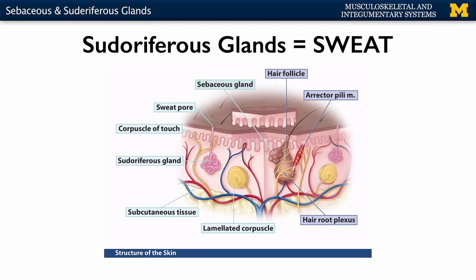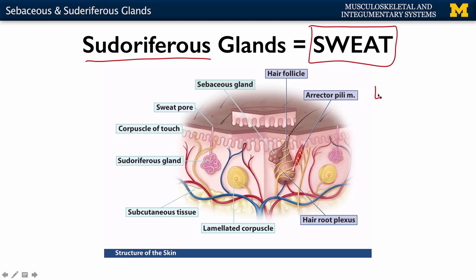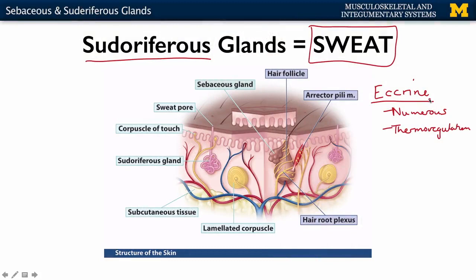The other main category of exocrine glands associated with the integumentary system are sudoriferous glands — what we typically refer to as sweat glands. You have so many sweat glands associated with your skin. When we think of sweat glands, typically we're thinking of eccrine. These are by far the most numerous and are really important in terms of thermoregulation. This is that water-like, odorless sweat we secrete throughout the body. Eccrine is actually a misnomer in terms of how it's released, but this is what you'll see in most textbooks.